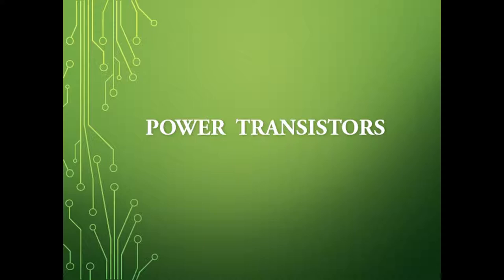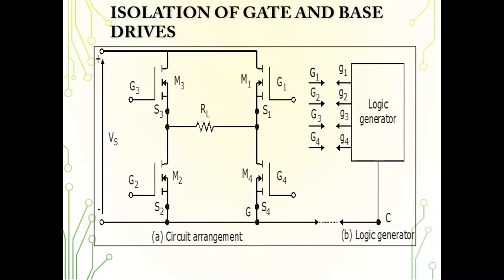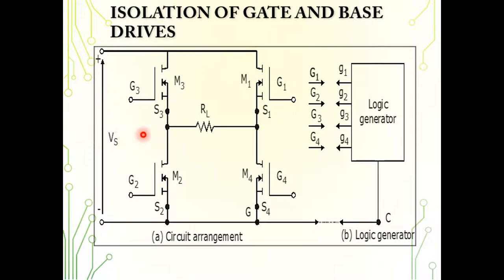Our main aim is to make the transistor operate in saturation with a low on-state voltage. For that, a sufficient gate voltage as well as base current is required. Here we have an input DC voltage applied across the supply terminals — this is the ground terminal — and this is an inverter circuit using MOSFETs. Each MOSFET has its own gate terminal and source terminal.